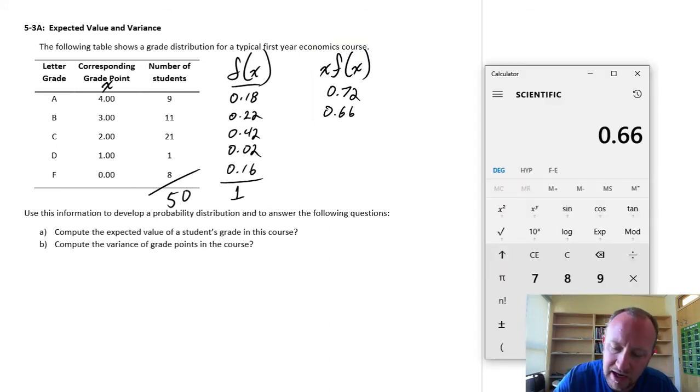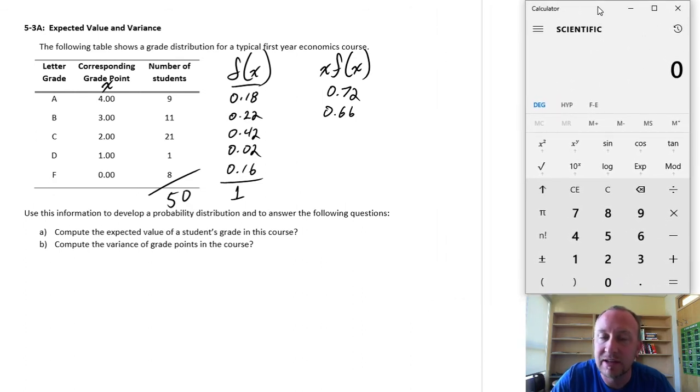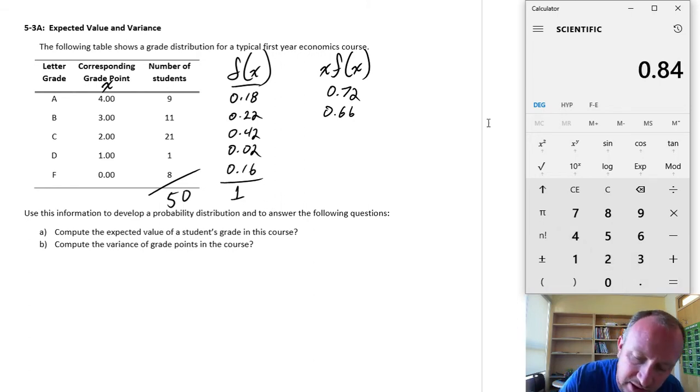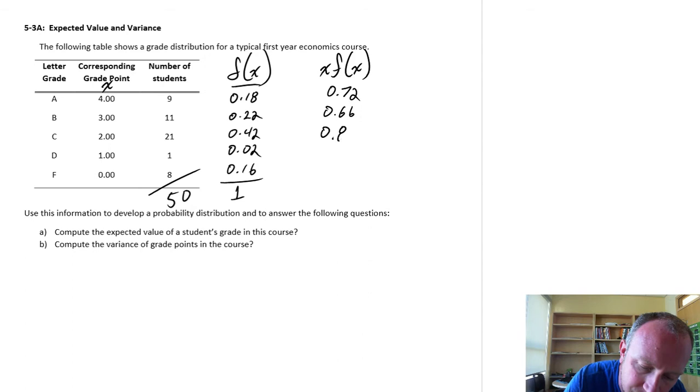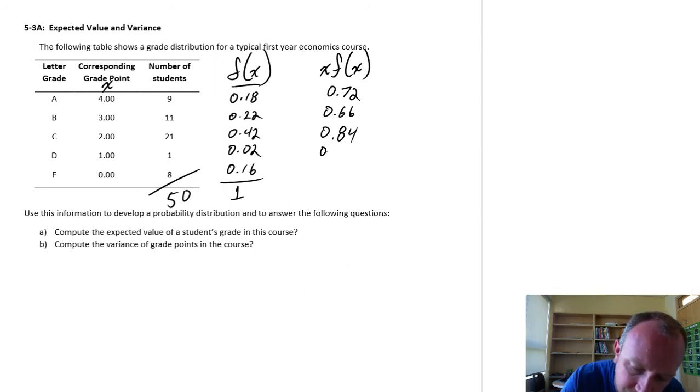We've looked at weighted averages in other exercises. I'm weighting each of these possible values for my discrete variable by its relative frequency. And then at the end, we're going to add all of them up and divide by the number of observations that we have. So here again, I'm going to look at 2 times 0.42, so this is 0.84. Our next one is 1 times 0.02, so that's 0.02.